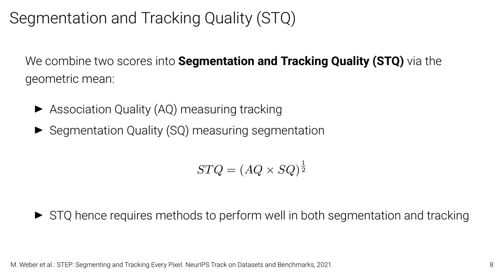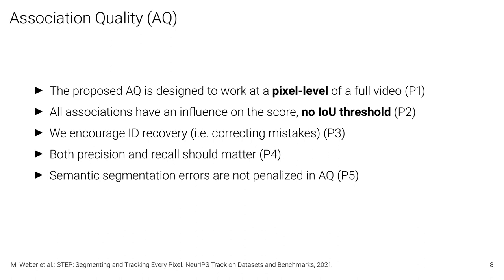The second contribution of our work is the Segmentation and Tracking Quality metric. It is the geometric mean of the association quality, which measures tracking performance, and the segmentation quality measuring segmentation performance. Due to the geometric mean, methods are required to perform well in both segmentation and tracking. For the mathematical details of the association quality, please refer to the paper. However, here are five important properties of the association quality: it is designed to work at the pixel level of full videos; all pixels have an influence on the score, so no threshold is applied; we encourage the correction of mistakes, meaning ID recovery in terms of tracking; both precision and recall should matter; and we decouple errors, so semantic segmentation errors are not penalized in the association quality but in the segmentation quality.